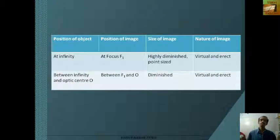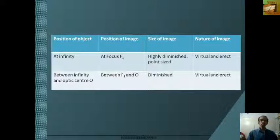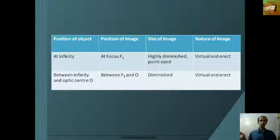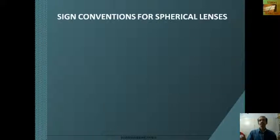These are summarized in the table. When position of object is at infinity, position of image is at focus F1; size is highly diminished or point sized; nature of image is virtual and erect. When position of object is between infinity and optic center, position of image is between F1 and optic center; size is diminished; nature of image is virtual and erect.